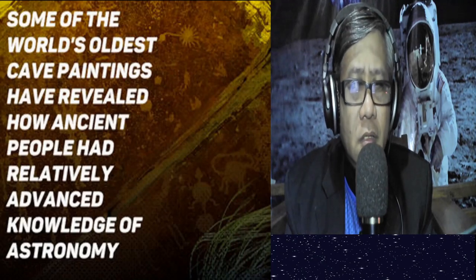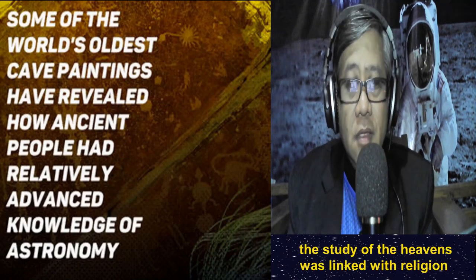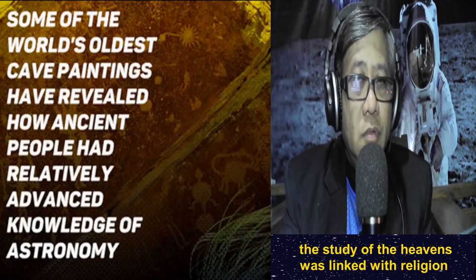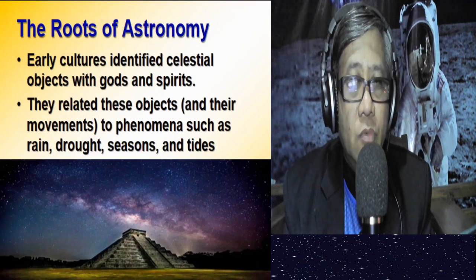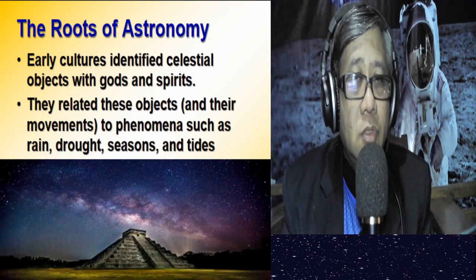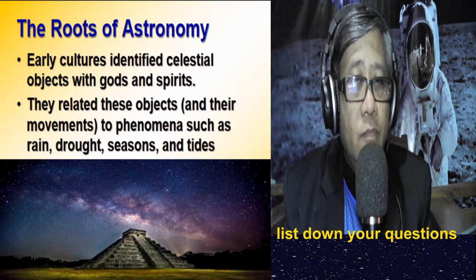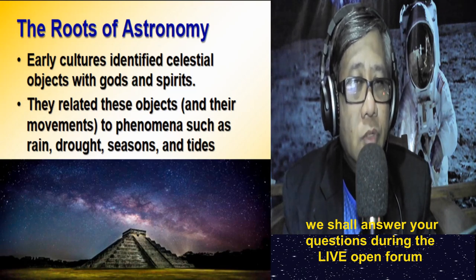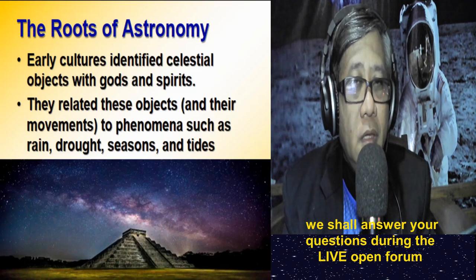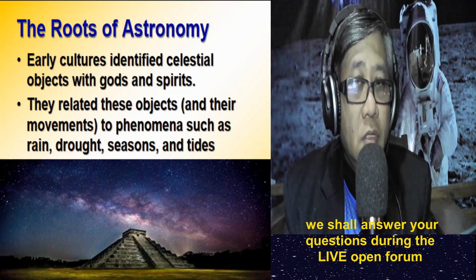Because of their fascination and amazement of what they saw in the night sky, our ancestors associated their astronomical observations with religion — with their gods and spirits. These early cultures identified celestial objects with religion and also related astronomical objects to natural phenomena such as rain, drought, seasons, and tides. Our ancestors placed so much importance on observing the night sky because they associated it with their gods and daily activities.